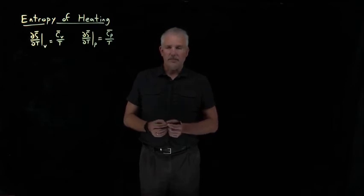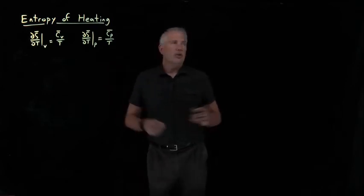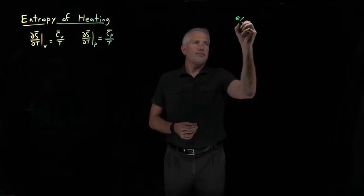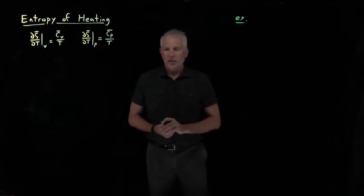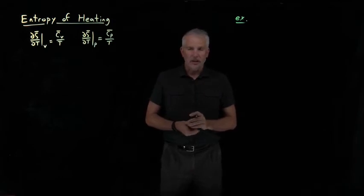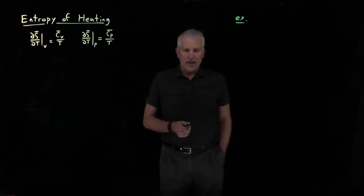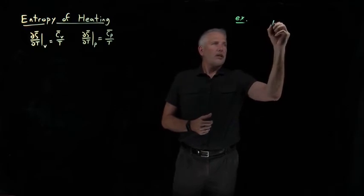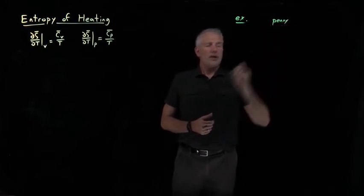It doesn't have to be an ideal gas. So to see how those work, let's try an example. Let's say we have a substance. So instead of a gas, I'll choose a solid object. I'll say we have a penny. If I pull a penny out of my pocket, pennies are made of copper, or at least they were.